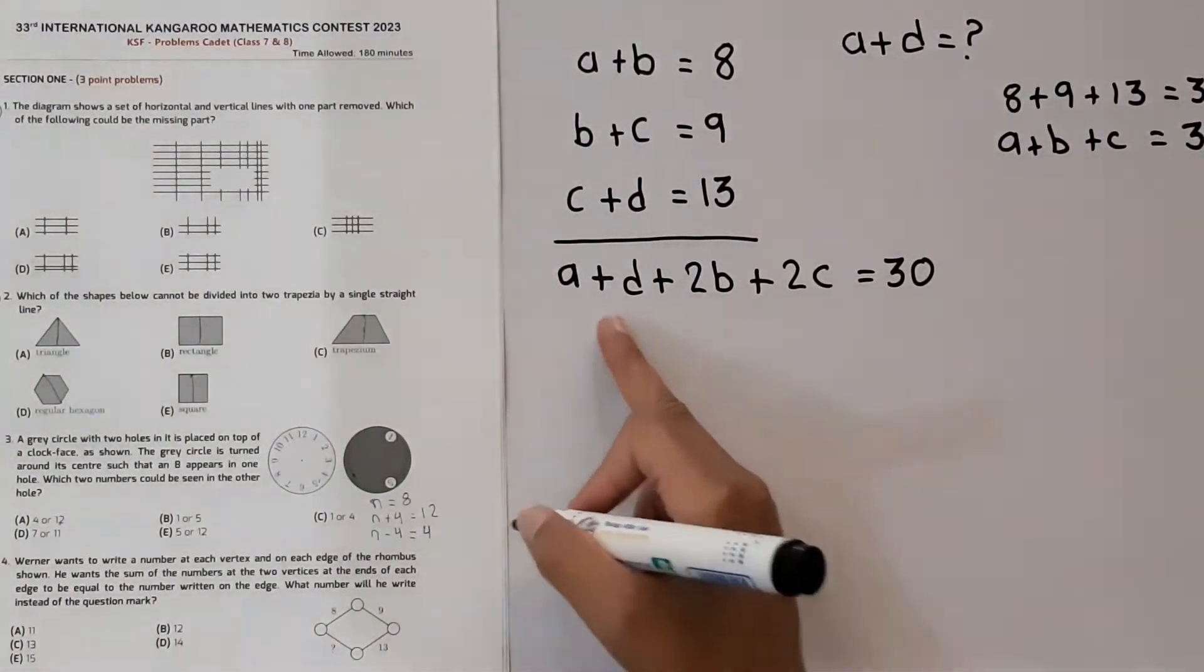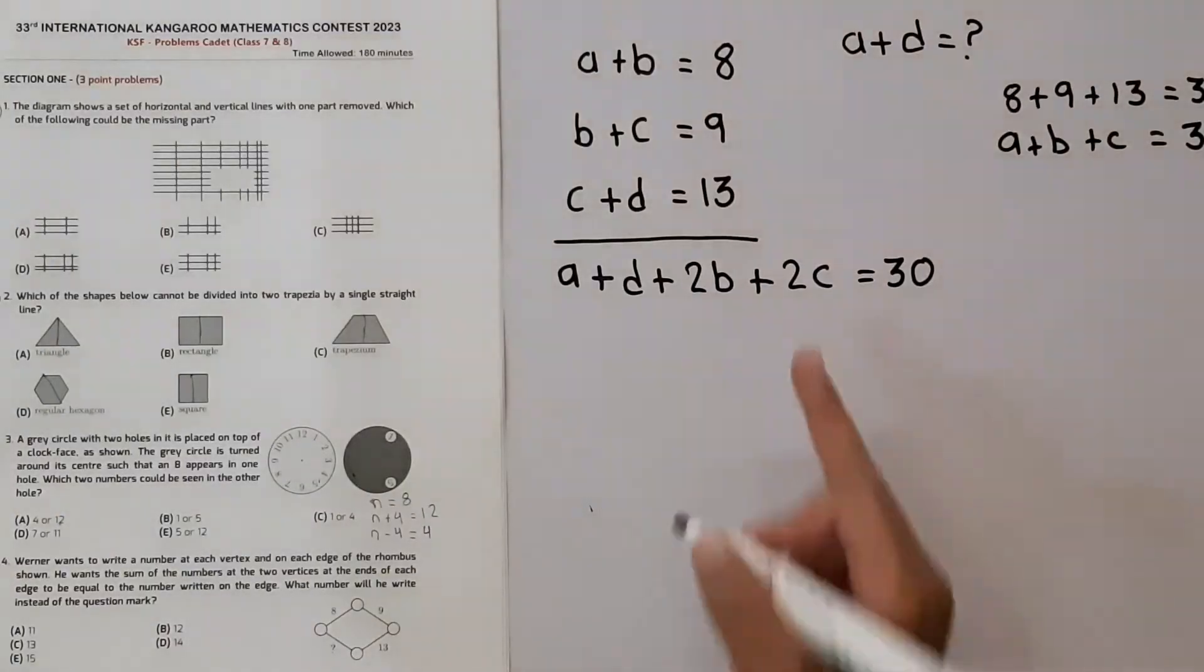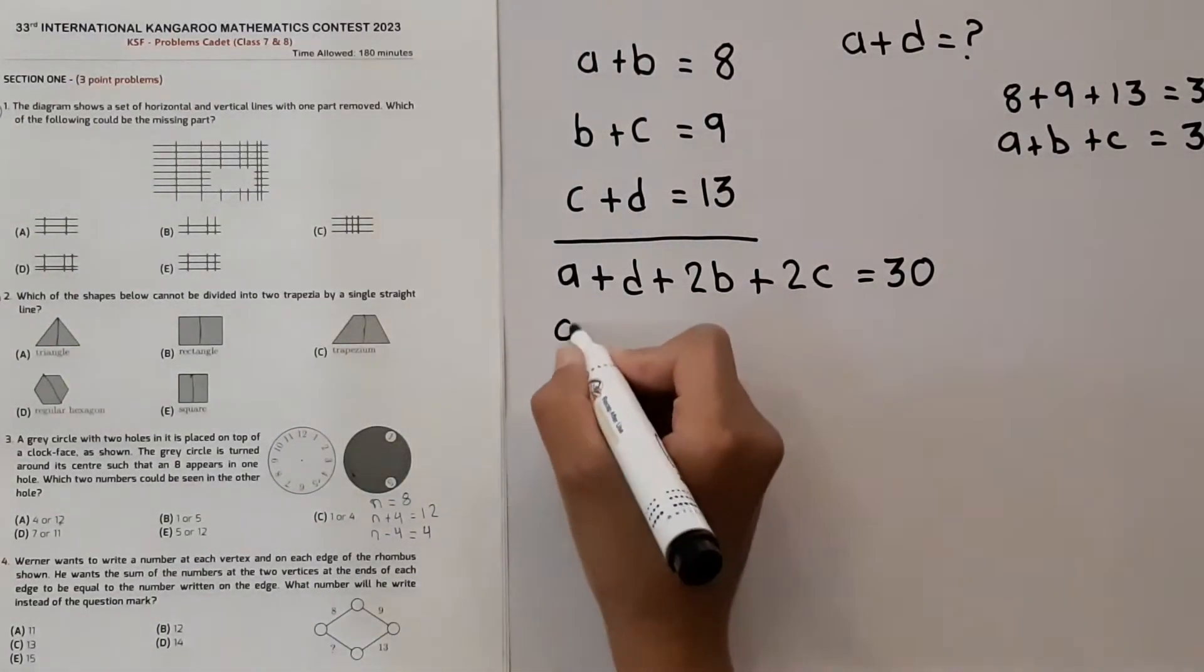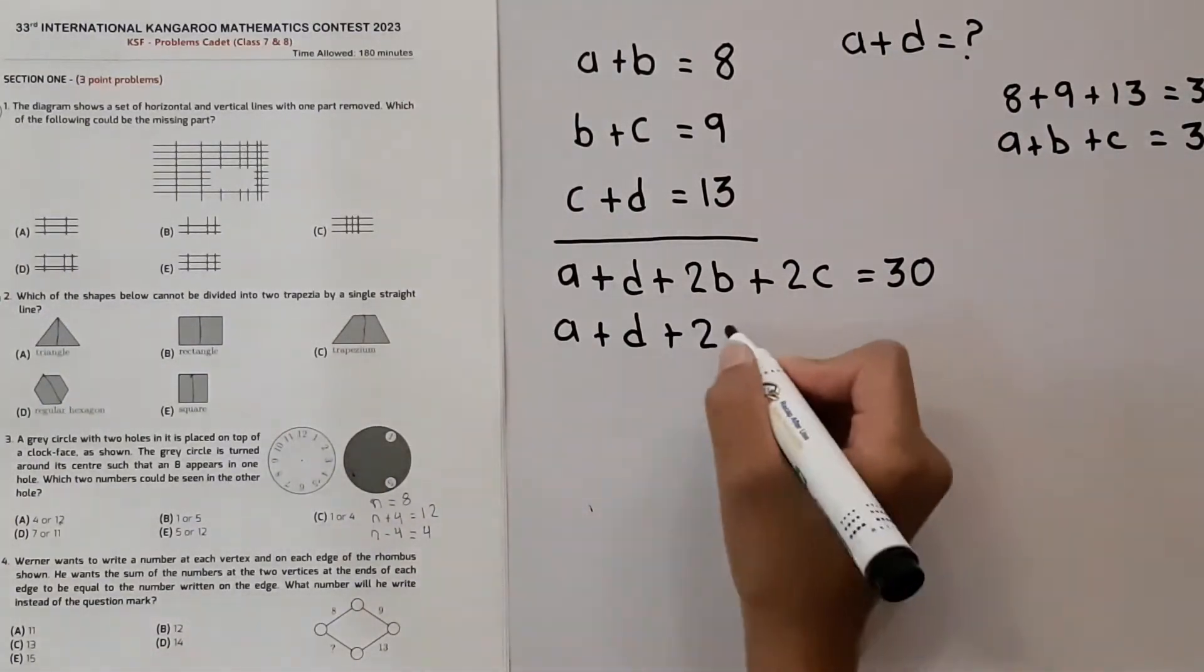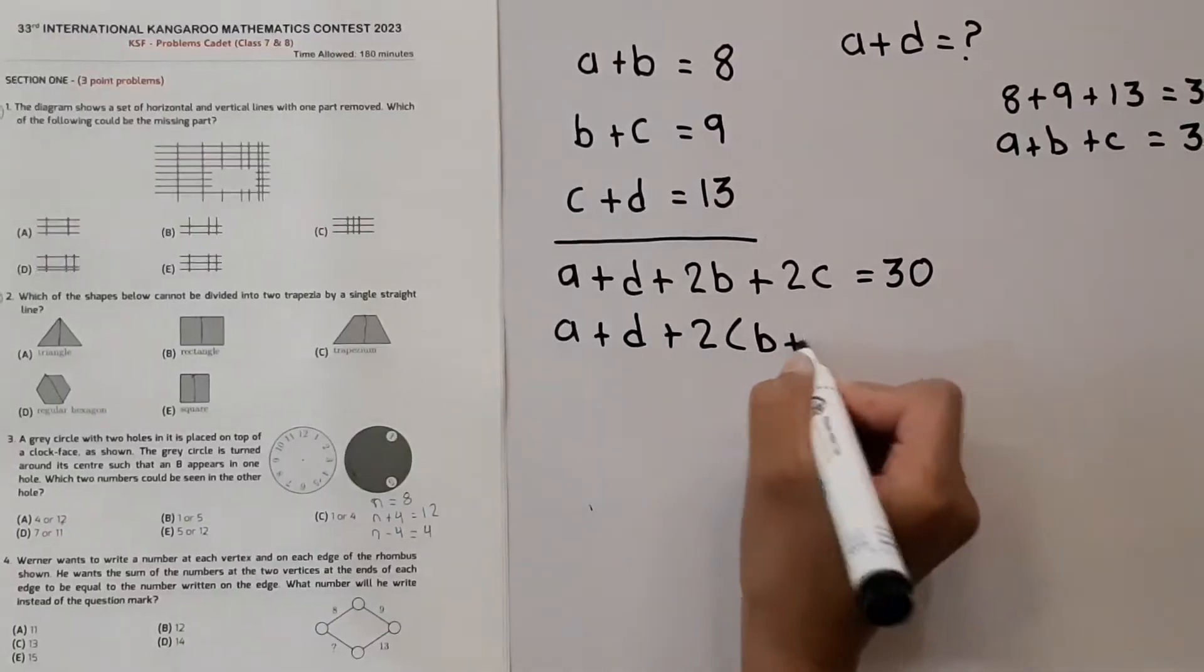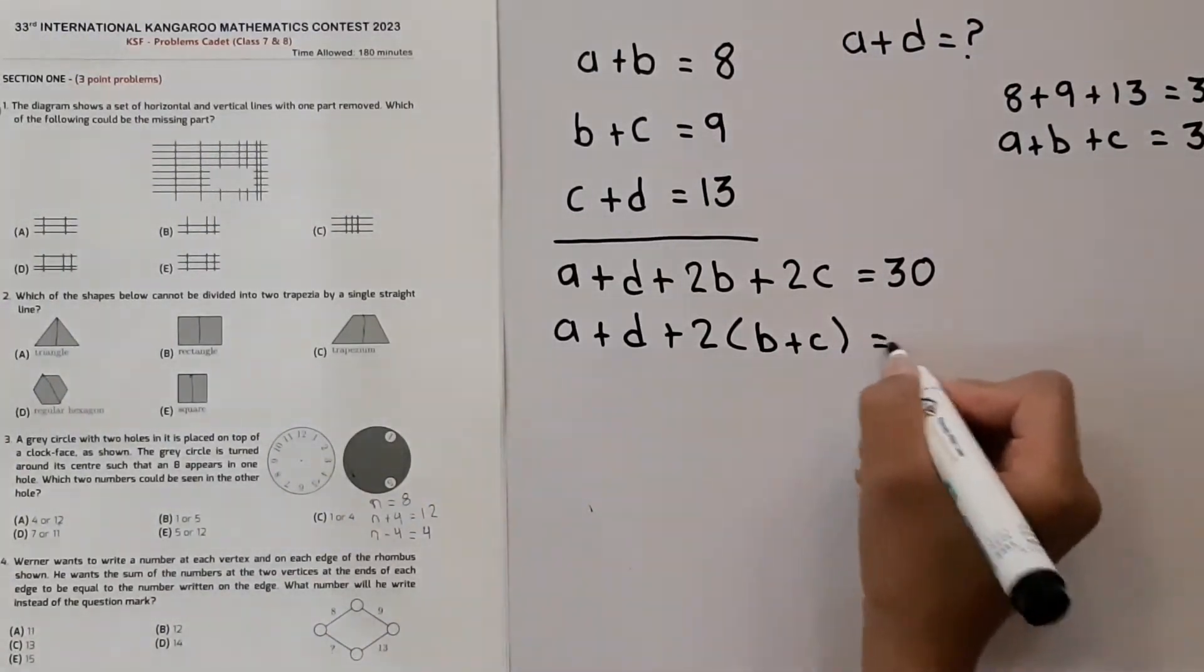Now A plus D plus 2B plus 2C is equal to 30. And we will solve this further. A plus D plus we can take two as common. Two times B plus C is equal to 30.